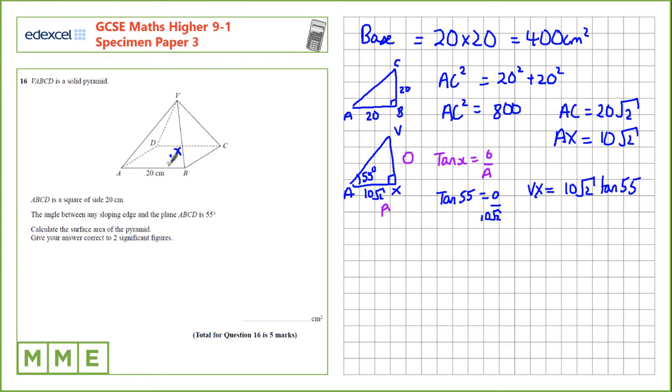Next, we have this vertical height here so we can finally figure out this sloped height. Let's call the midpoint of this M and draw the triangle MXV. We know that the length from M to X is half of the side length. That's 10. And VX is 10 root 2 tan 55. On this side length, VM, we can again use Pythagoras.